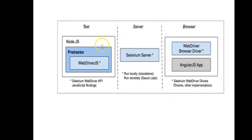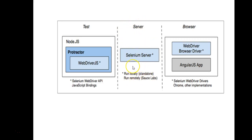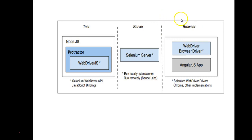The server provided by Selenium is what Protractor uses. So if anyone asks you about the different layers in Protractor's architecture: there are three layers — first is the test layer, then the server layer, then the browser. The server internally uses Selenium server, which can be run locally using a standalone jar or remotely using SauceLabs or any other configuration.